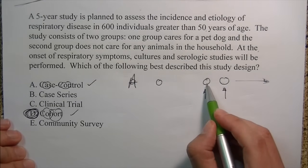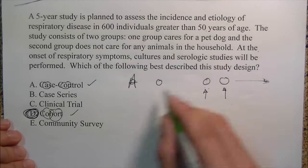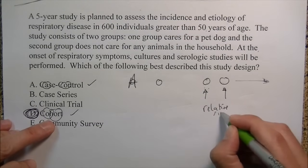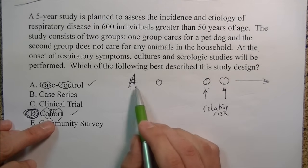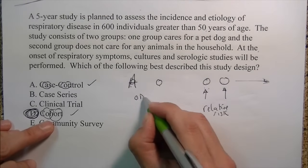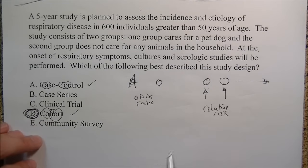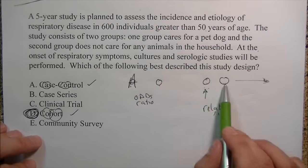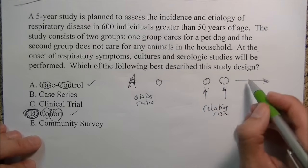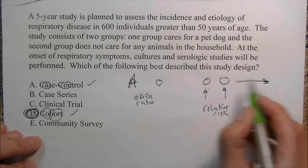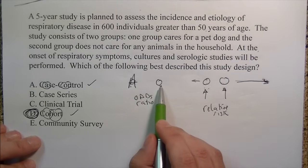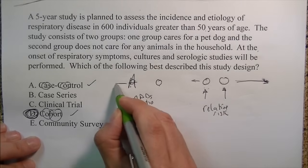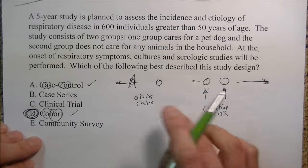Since it's cohort — relatives look the same — when you see cohort, you say relative risk. When you say case control, you say odds ratio. You've got to have that memorized. They look the same, they're relatives — relative risk, nobody has disease initially. It can look forward and backwards. When someone has a disease and someone does not, you think odds ratio, case control, and you only look backwards.